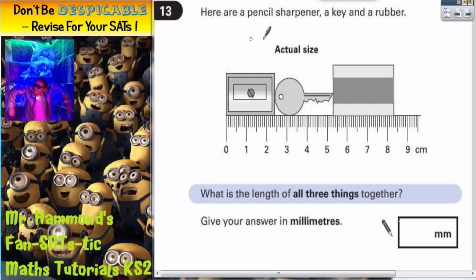Question 13. Here are a pencil sharpener, a key and a rubber. This is actual size with a ruler. It says, what is the length of all three things together? Give your answer in millimeters.